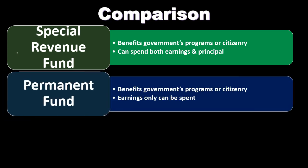The permanent fund is another fund that has restrictions, so it could be confusing to distinguish it from a fiduciary trust fund. The permanent fund is also a governmental type fund — not a fiduciary fund. It benefits government programs or citizenry as well. Although there are restrictions, the earnings only can be spent — that's a key difference between these two fund types.